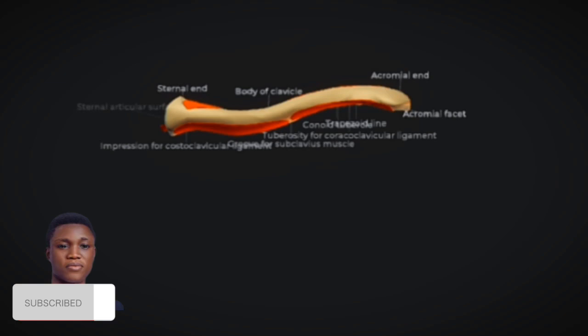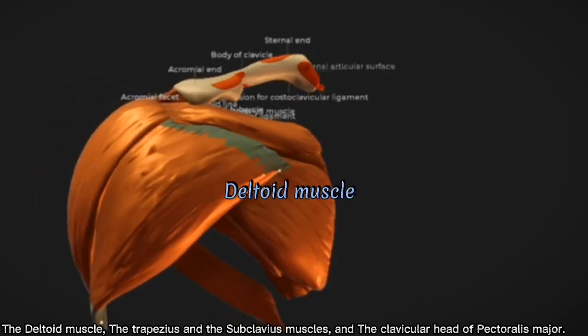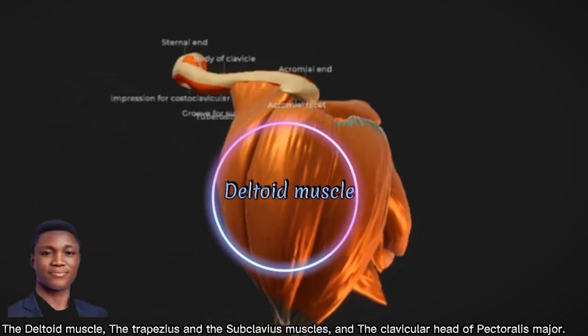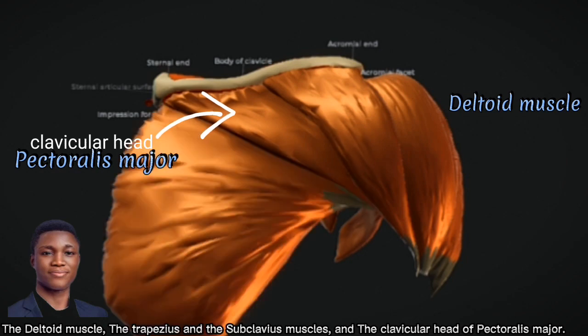Next, we will be talking about the attachments of the clavicle. The muscular attachments of the clavicle include the deltoid muscle, the trapezius and the subclavius muscles, and the clavicular head of pectoralis major.